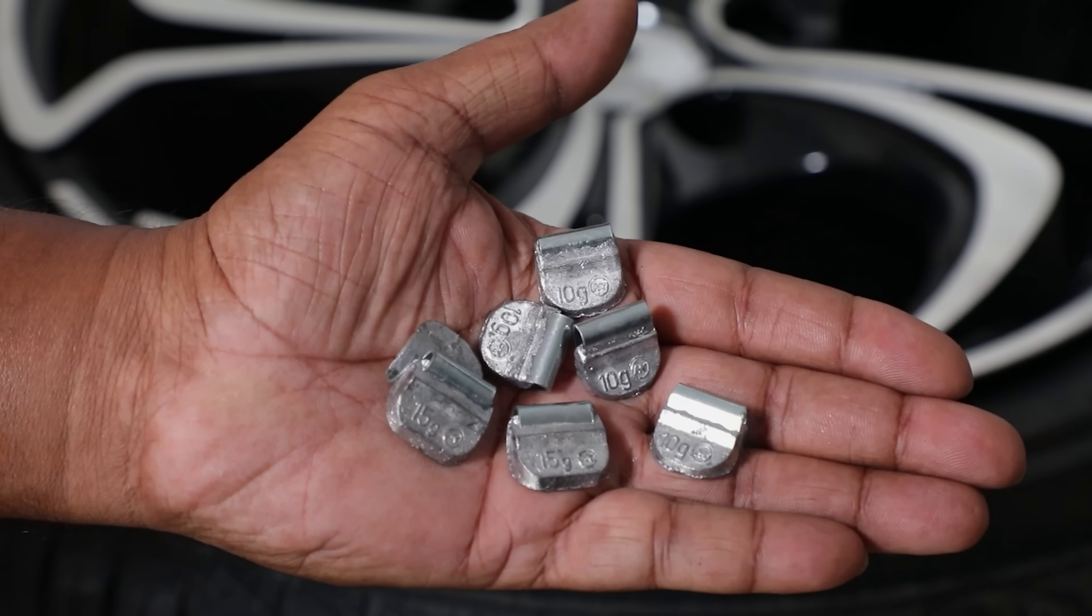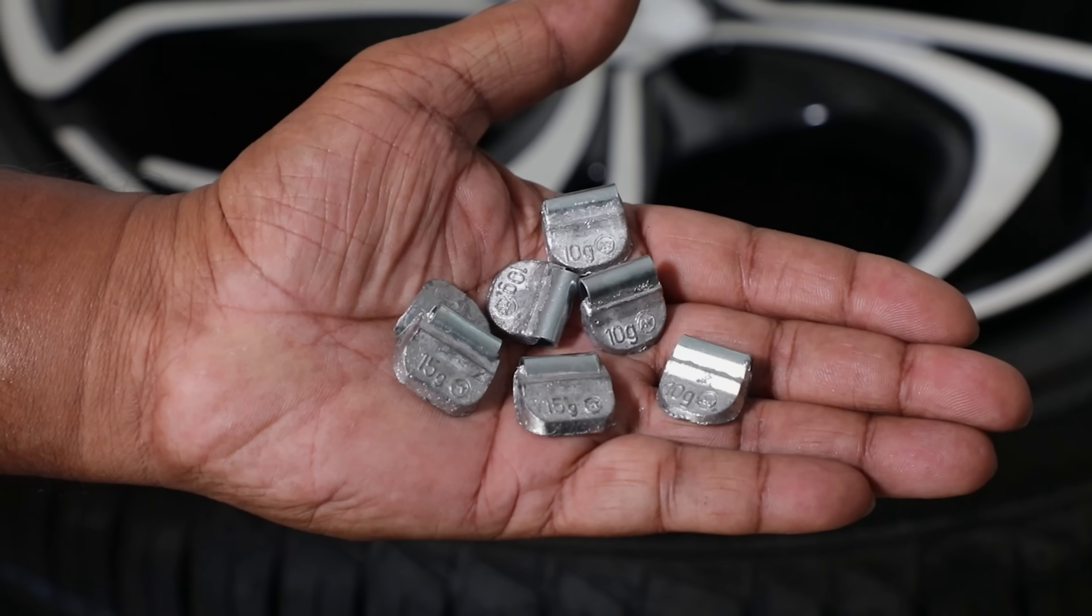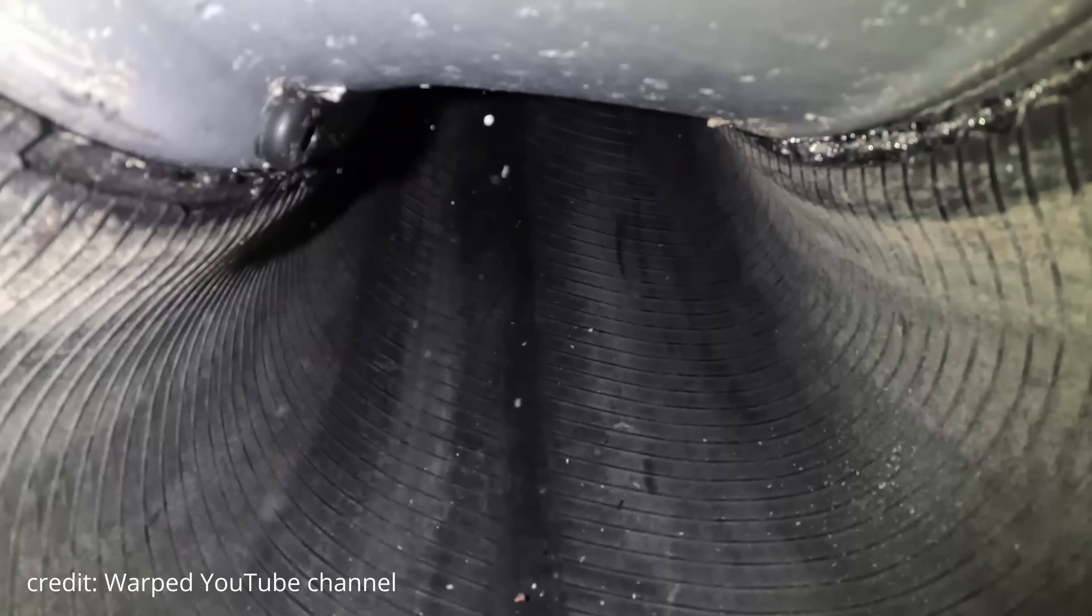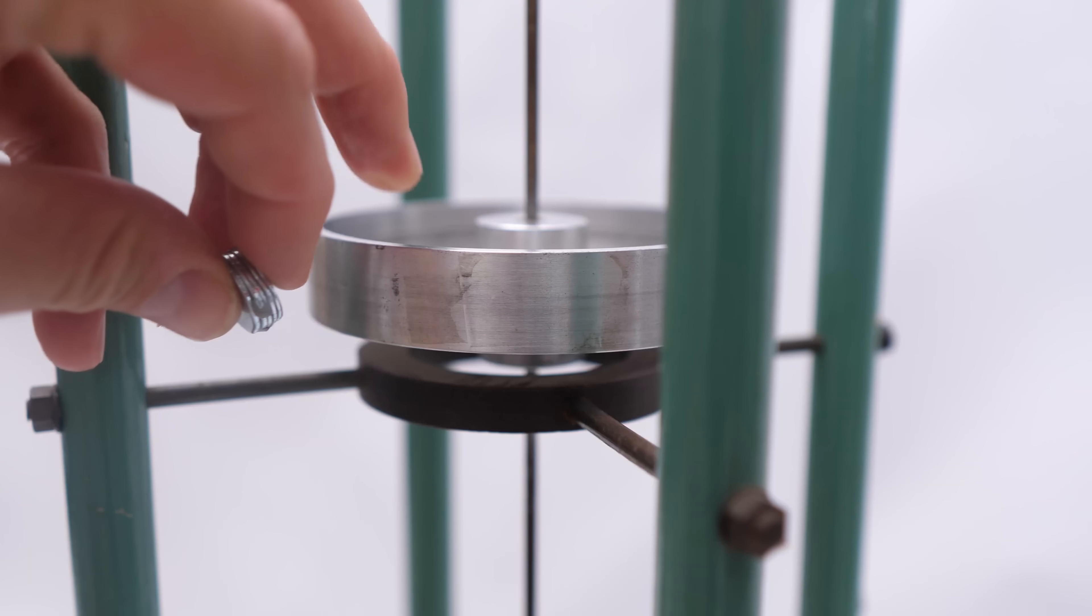Tires can shake your entire vehicle if they're unbalanced. It's like installing a rumble pack for your car. So typically a mechanic would precisely place counterweights to fix it. But what if we could skip all of that and just throw glass beads at the problem? Well, here's why I thought, just intuitively, that tire balancing beads couldn't possibly work.